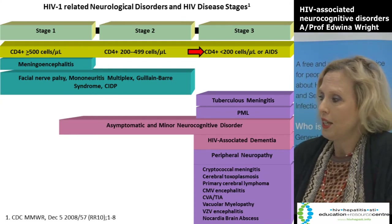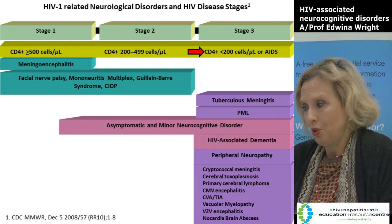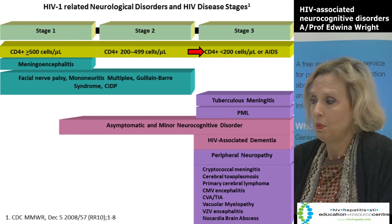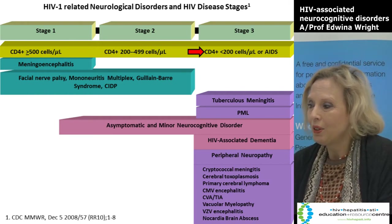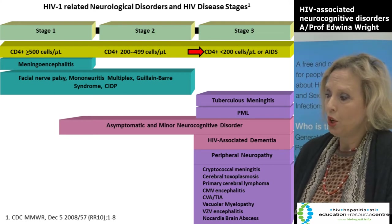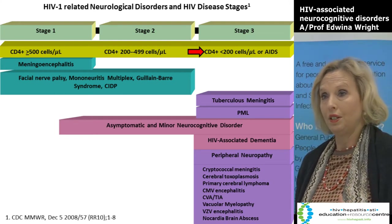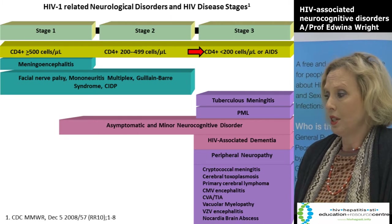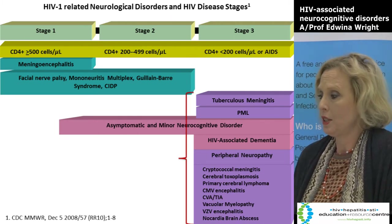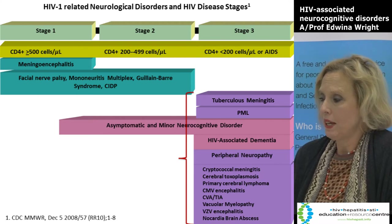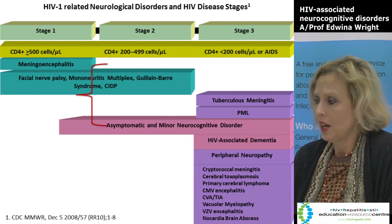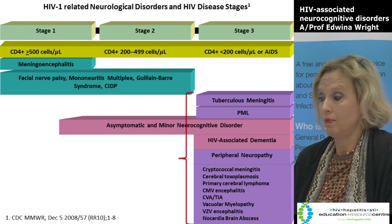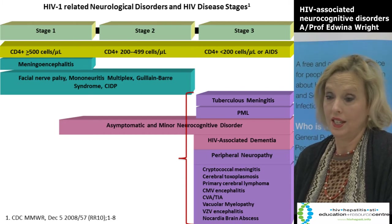In stage 3, individuals are usually quite symptomatic. They have CD4 cell counts under 200 or have even experienced an AIDS illness. The majority of neurological disorders that occur in untreated HIV positive populations occur when individuals have low T cell counts, and they include things like TB in the brain, TB meningitis, HIV dementia, asymptomatic and minor neurocognitive disorders, and other forms of neurological opportunistic infections and cancers like primary CNS lymphoma.